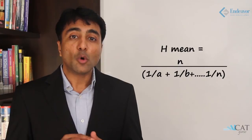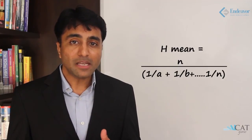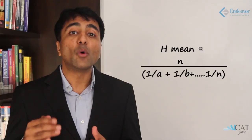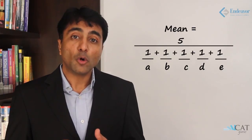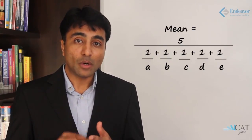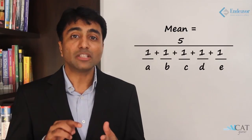The harmonic mean is calculated using the formula: n / (1/a + 1/b + 1/c + … + 1/nth term). So if we want the harmonic mean of the first five terms a, b, c, d, e, it will be 5 / (1/a + 1/b + 1/c + 1/d + 1/e). This sums up the three standard progressions — arithmetic, geometric, and harmonic — that we encounter in almost all competitive entrance exams.